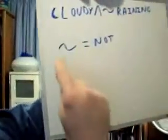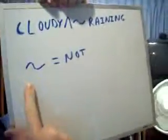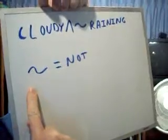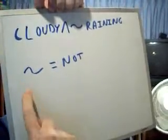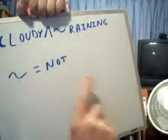In mathematics, what is the logical not symbol and how is it used? Do you remember in a previous video when I talked about the tilde? This is a tilde right here, and in mathematics it means 'not.'